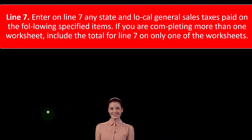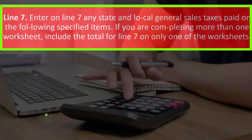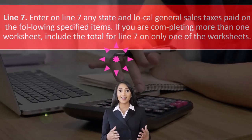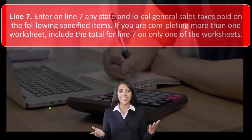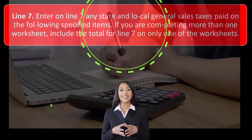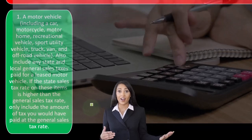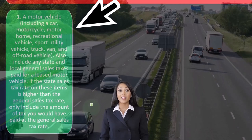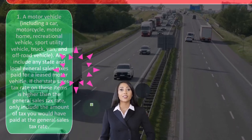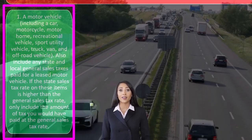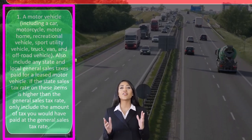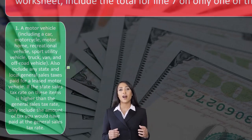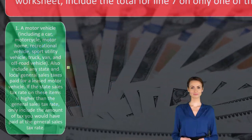Line seven: enter any state and local general sales tax paid on specified items. If you are completing more than one worksheet, include the total for line seven on only one worksheet. Specified items include a motor vehicle — such as a car, motorcycle, motor home, recreational vehicle, sport utility vehicle, truck, van, or off-road vehicle. A larger purchase like that means more sales tax, so also include any state and local general sales tax paid for a leased motor vehicle.